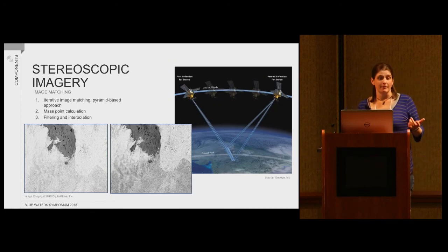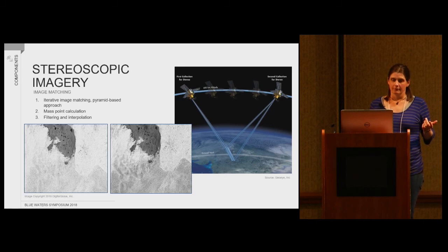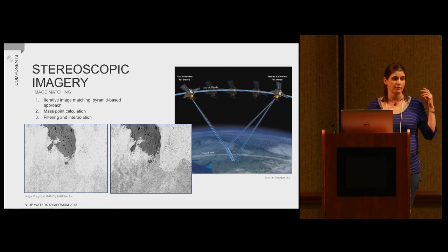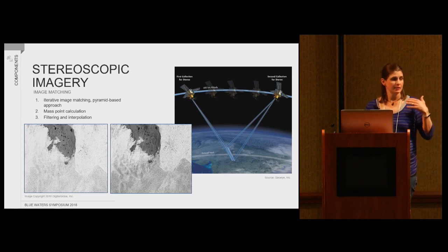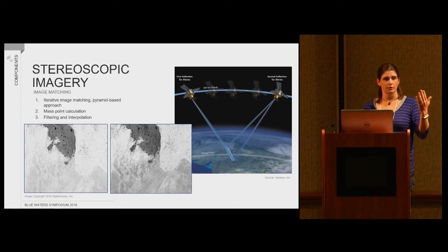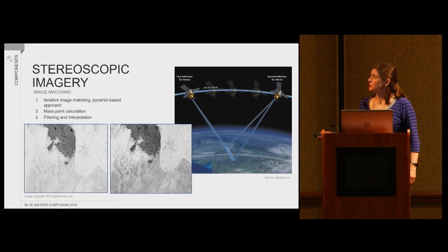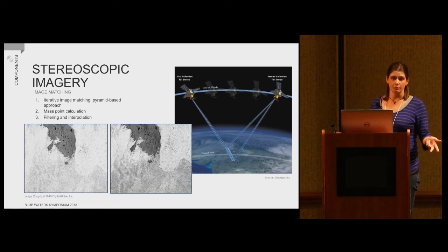For those who are not familiar, let me quickly go over what stereoscopic imagery is. Essentially these satellites are telescopes pointing down. They go overhead in a polar orbit, take a shot of a particular area of the earth, go another 45 seconds or so, point back to the area they just collected and collect it again. So you end up with two images taken of the same place at essentially the same time from a slightly different perspective.